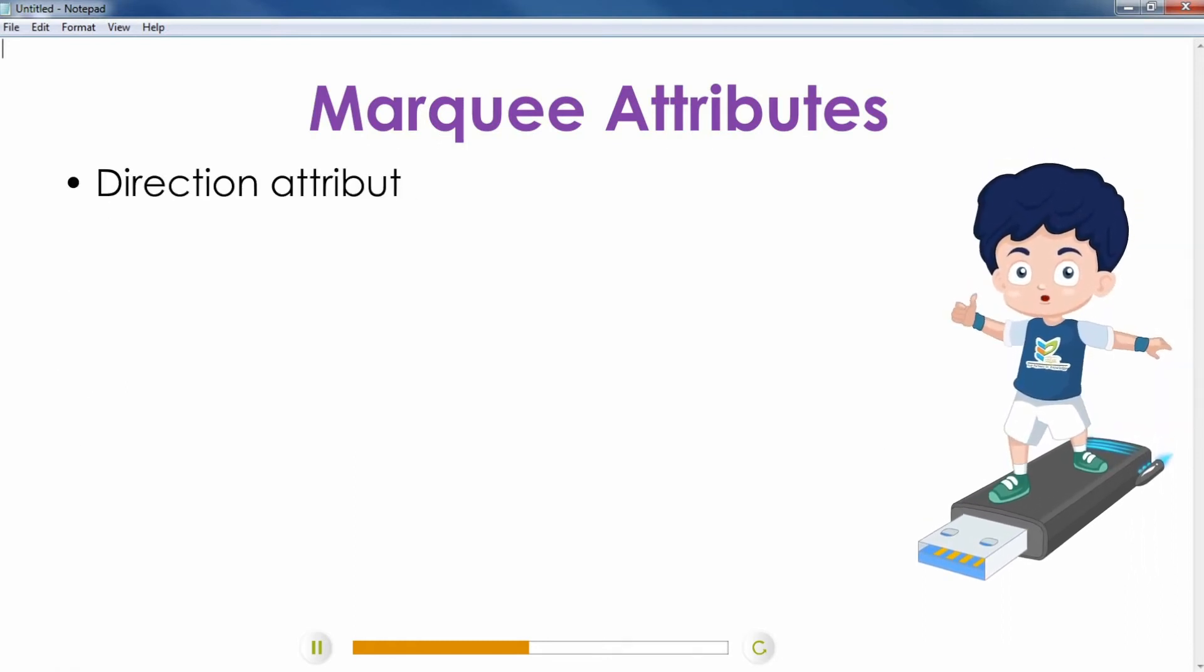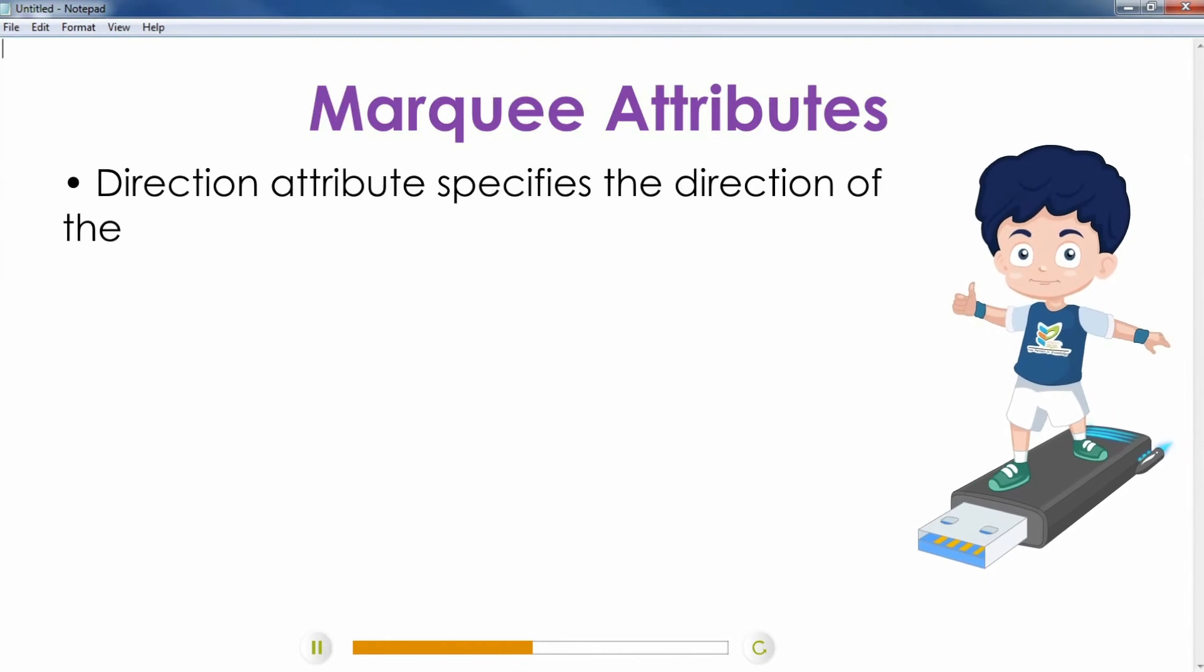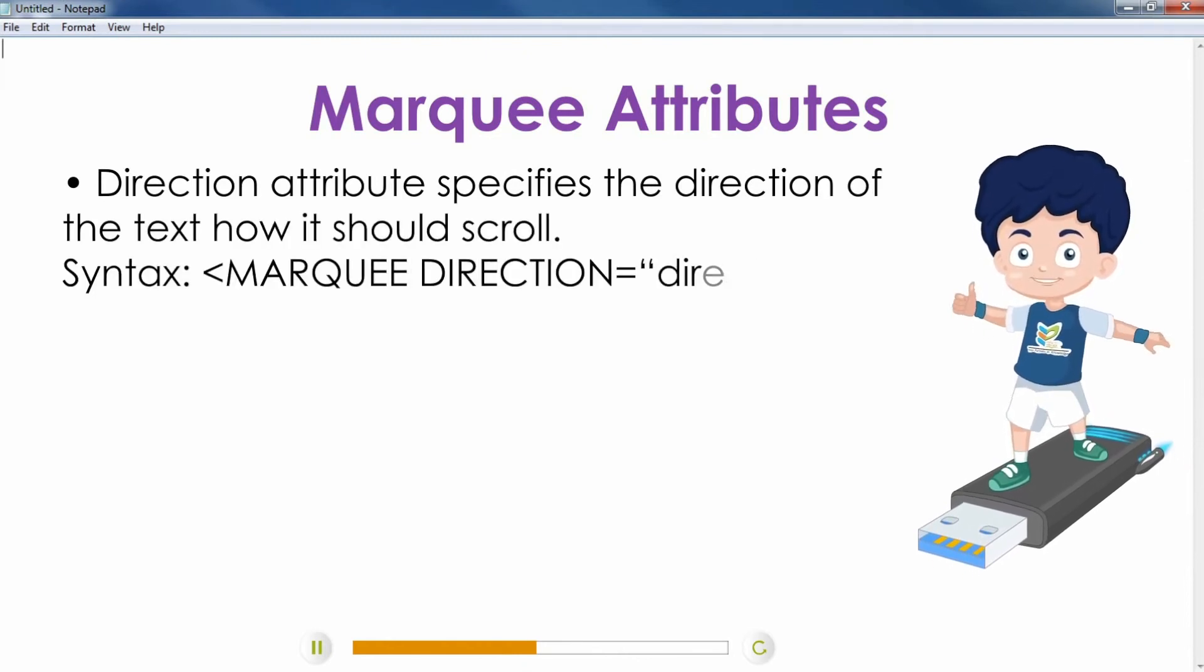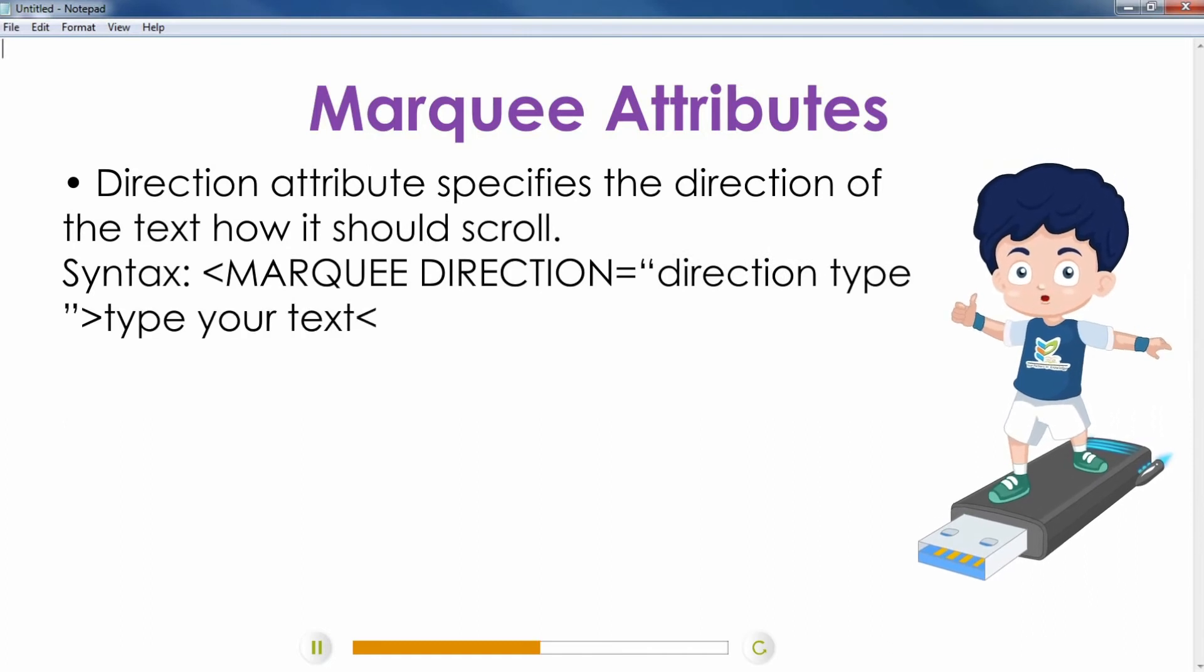Direction attribute specifies the direction of the text, how it should scroll. Syntax: Marquee direction equals direction type, type your text, slash marquee.